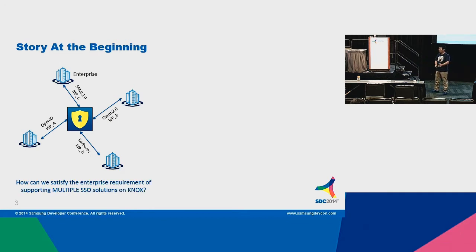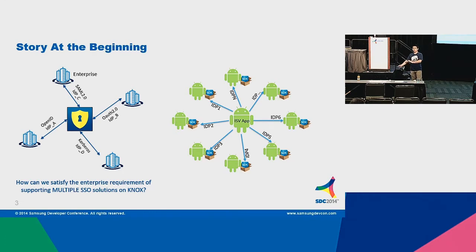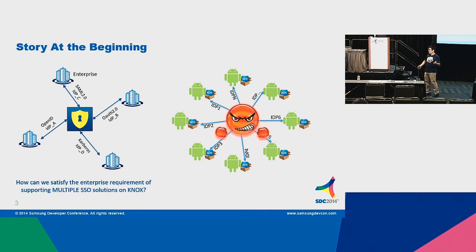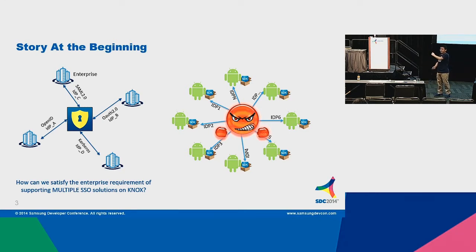They asked me how to satisfy customer requirements of supporting multiple SSO solutions in our platform. The second challenge came from our ISV partners. When I first went to Box and asked them to create one version for Samsung Knox, they almost said no way, because they had already created so many versions for different IDPs and different MDM vendors. It is very resource-consuming for them to create a specific version for each specific SSO solution.